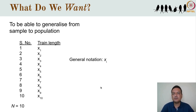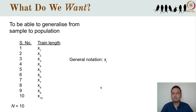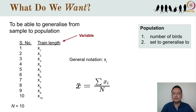Another convention is to denote specific samples with numbered subscripts. If I measure the trains of 10 peacocks, then I could call those 10 measurements x sub 1, x sub 2, and so on until x sub 10 — with the general notation x sub i. The formula for the sample mean would be the sum of all x sub i's divided by the sample size n. Another technical word is the term variable, which refers to the aspect being measured.